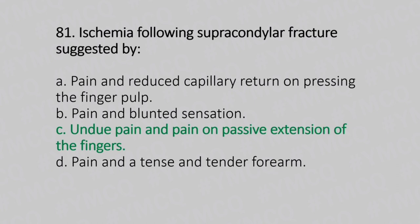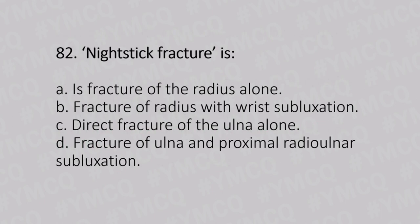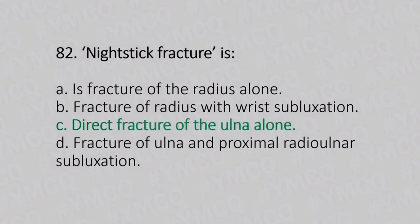Now let's move to question number 82. Nightstick fracture is. Option A: isolated fracture of the radius alone. Option B: fracture of radius with wrist subluxation. Option C: direct fracture of the ulna alone. Option D: fracture of the ulna with proximal radio-ulna subluxation. And the answer is Option C, direct fracture of the ulna alone.